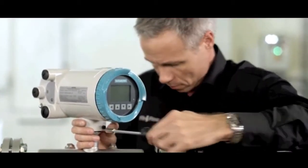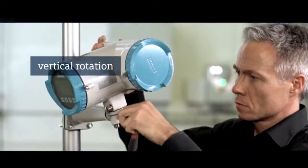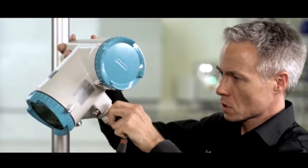In remote configuration, vertical rotation is also possible. Loosen the locking cap on the bracket slightly. The transmitter can then be rotated in increments of 15 degrees.